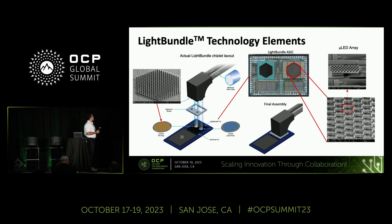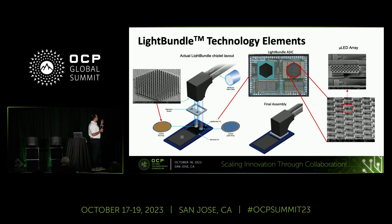We name our technology Light Bundle. The main component is the ASIC chip, which has two hexagonal arrays. The hexagonal array on the right is the transmit array with micro-LEDs transferred on top of it. The left hexagonal is the receive array with a PD array transferred on top of it. We also use an alignment socket to connect the multi-core fiber to the CMOS chip. The picture shows the final assembly with the connector, multi-core fiber, and the chip.